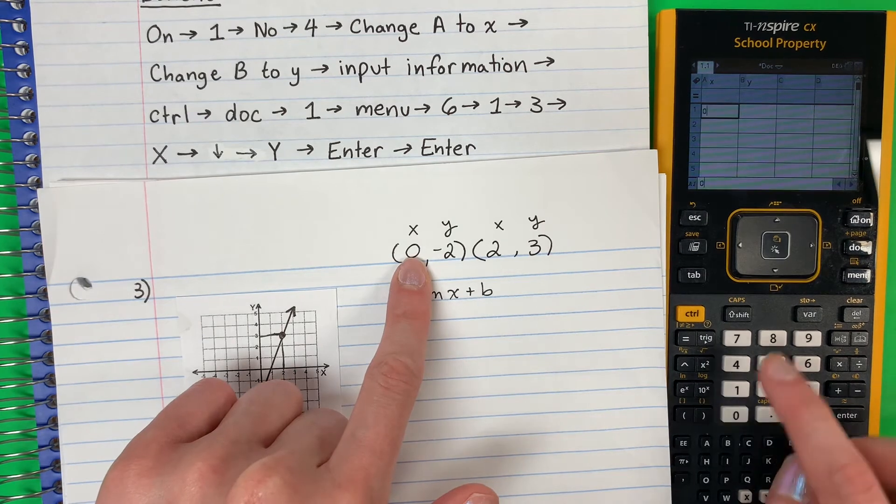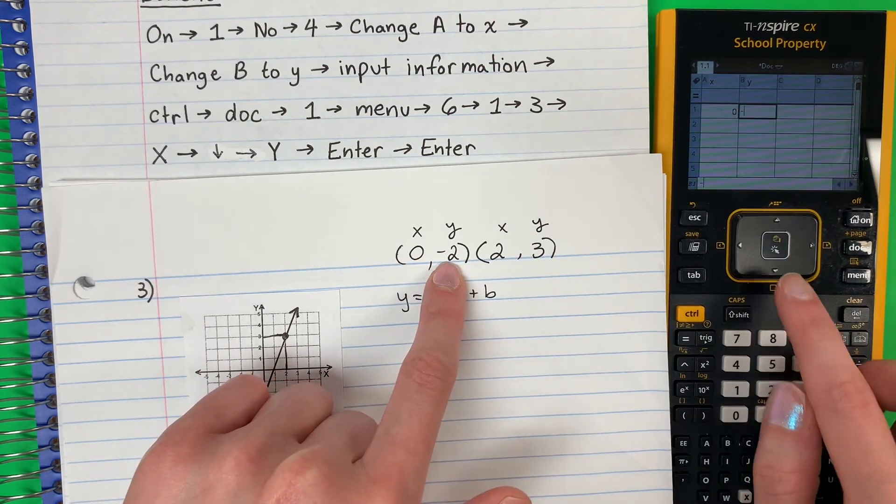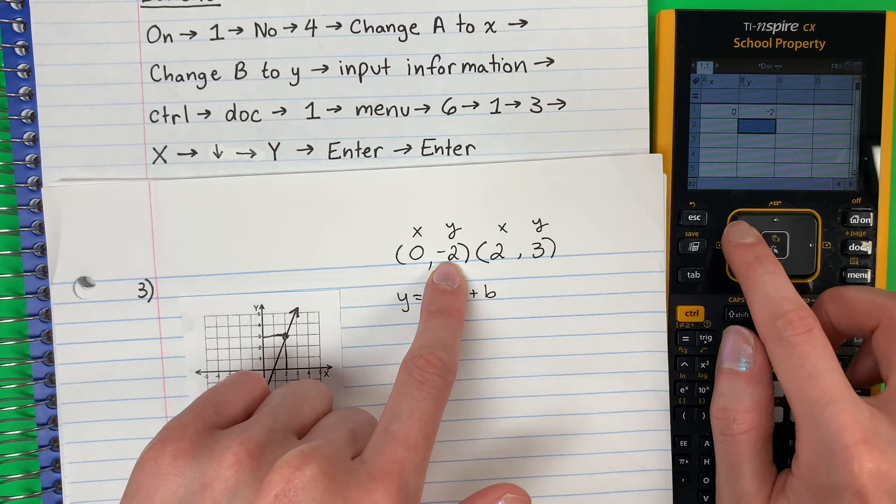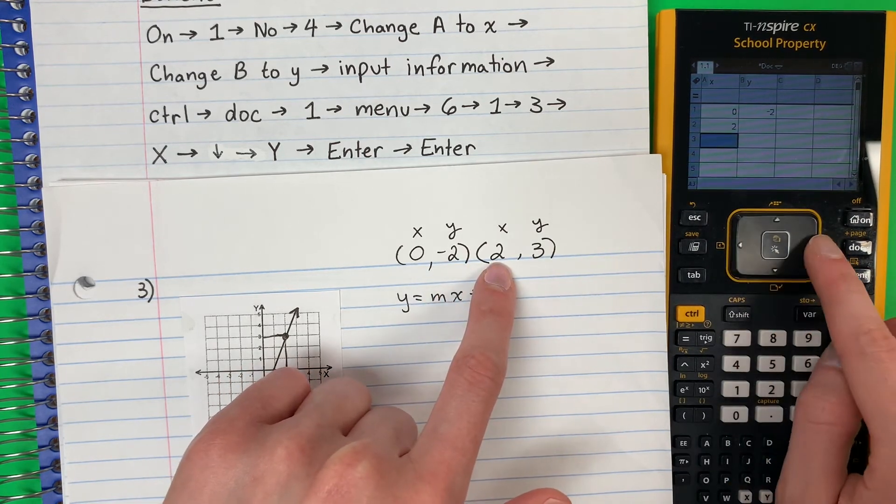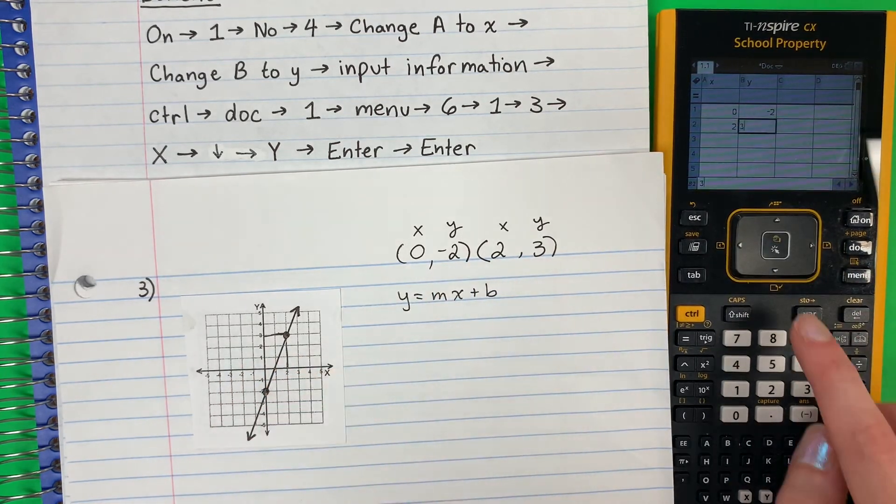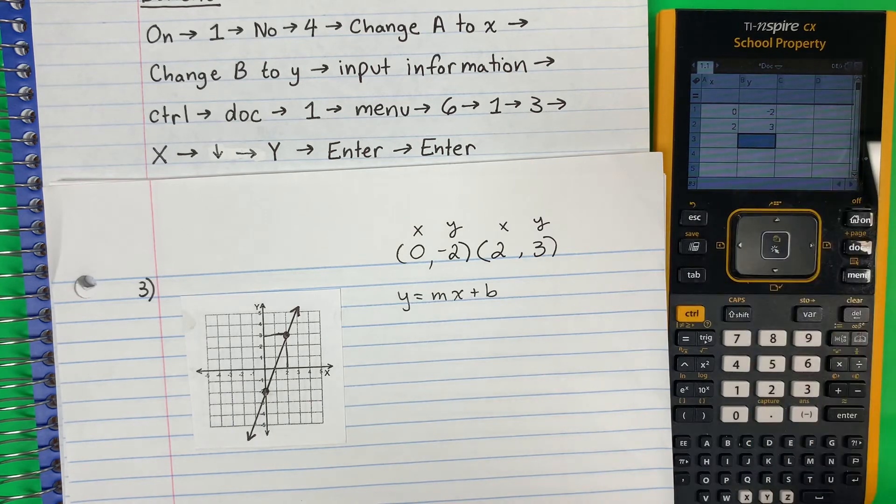So I have 0. And next to it is siguiente, negative 2. Go down. Here is 2. Next to it is 3. Go down. Make sure you're here.